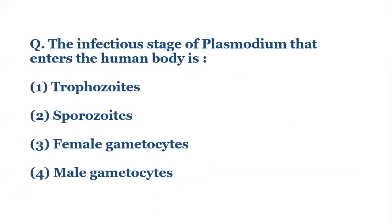The question is: the infectious stage of plasmodium that enters the human body is — 1. Trophozoites, 2. Sporozoids, 3. Female gametocytes, and 4. Male gametocytes.